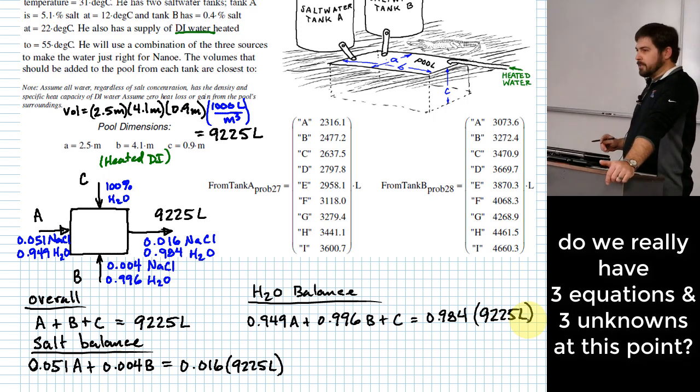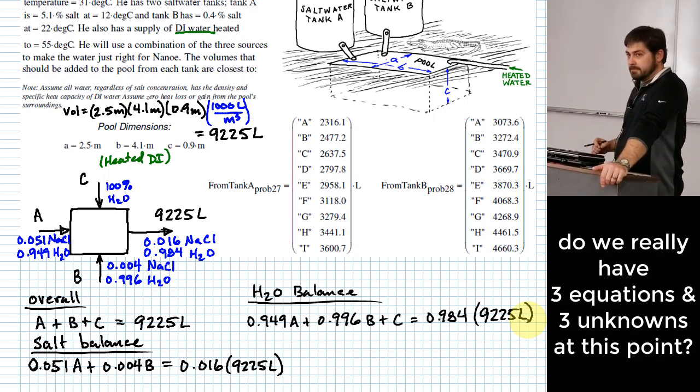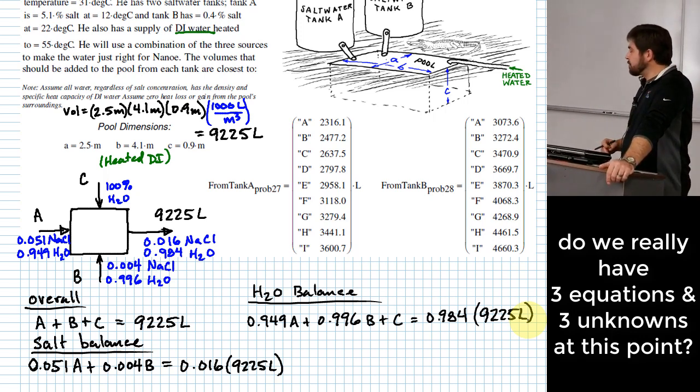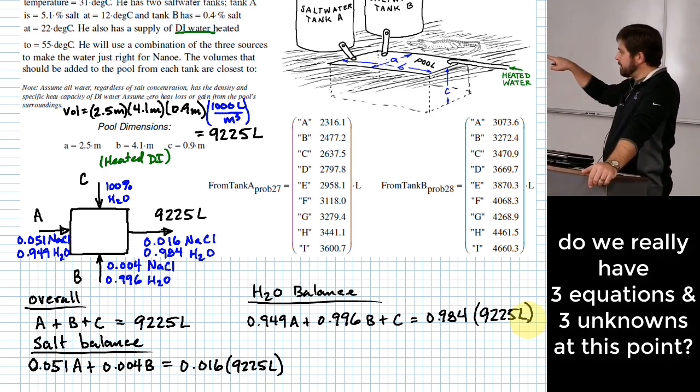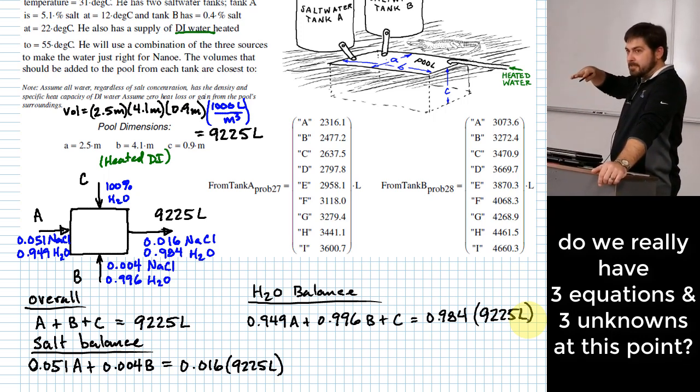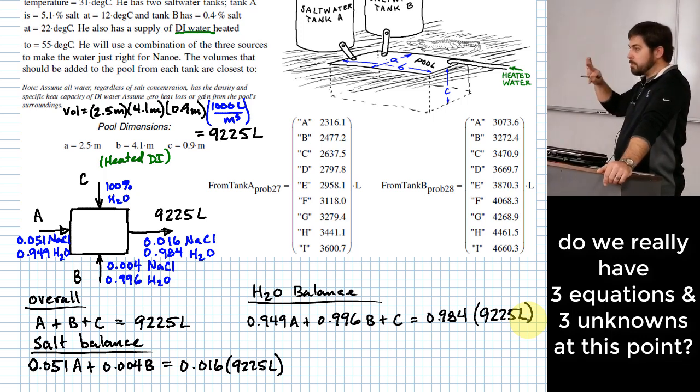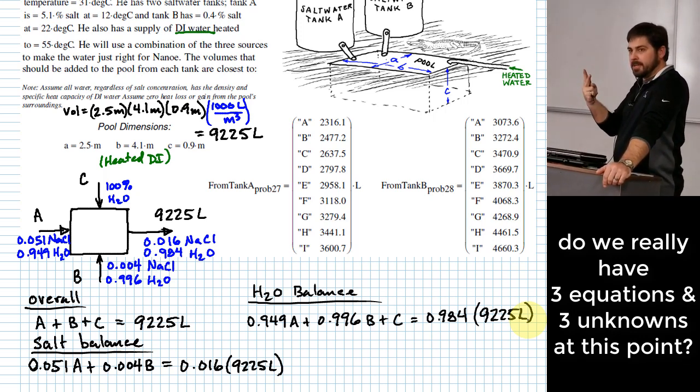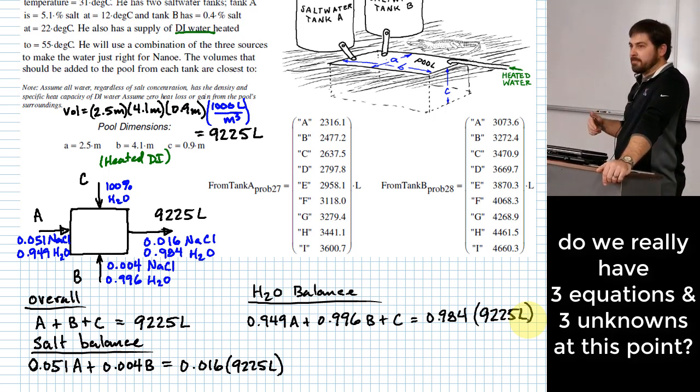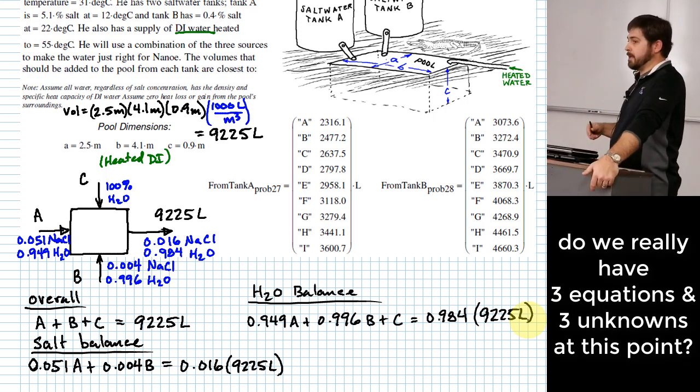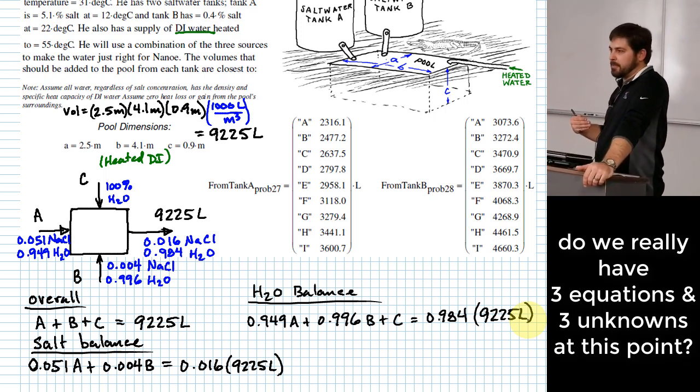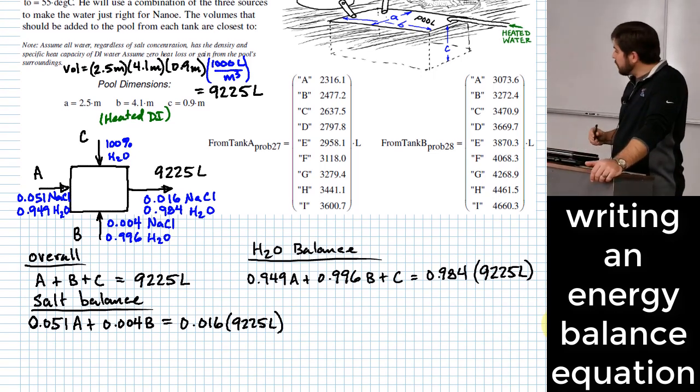Now here's where a lot of people go wrong. They look at this and they say, I've got three equations and three unknowns. Why is that a bad way to think about it? These are not all three independent equations. The reason I know they are not all three independent equations is that the overall mass balance is a consequence of the salt mass balance and the water mass balance. So there's not actually three principles that we are bringing to bear on this. There's only two. So we don't actually have three independent equations here, even though it might appear to if you're not looking at it too carefully. So what else do we need to do?